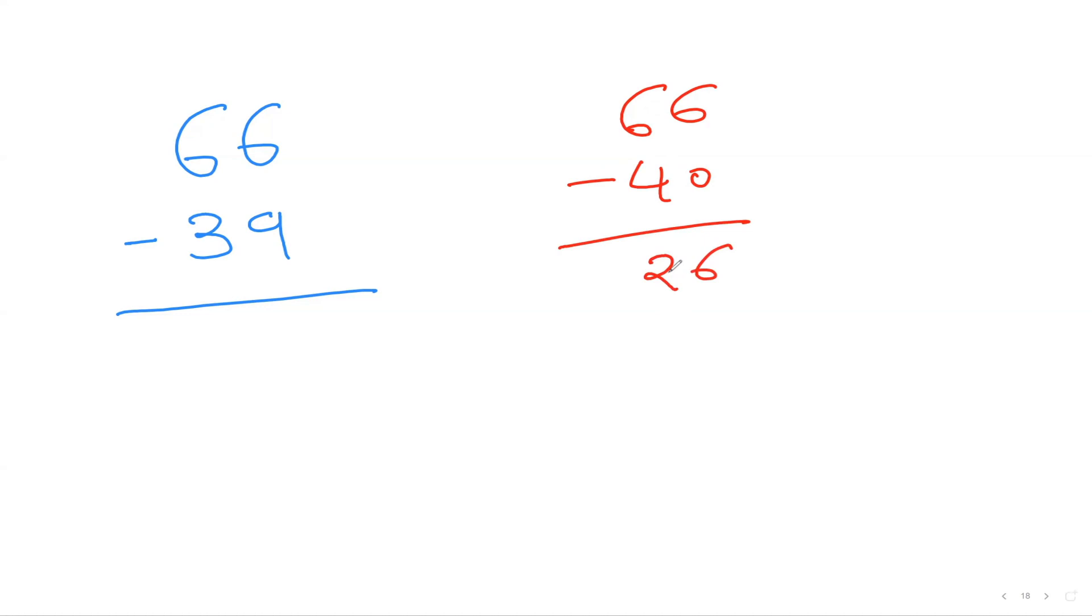I subtracted one extra number—I was supposed to subtract only 39 but I subtracted 40—so I'll add one, which gives me 27. Rather than minus 30 then minus 9, the best thing is you can minus 40 and then plus one. A little bit of creativity always adds more speed.